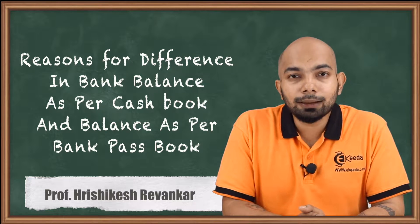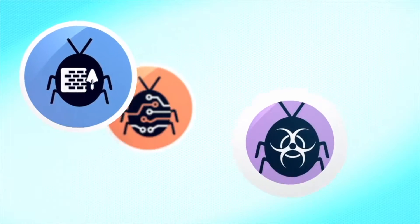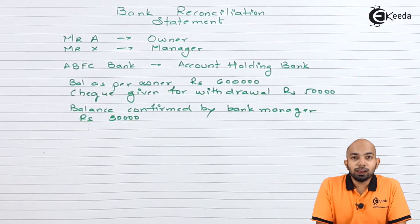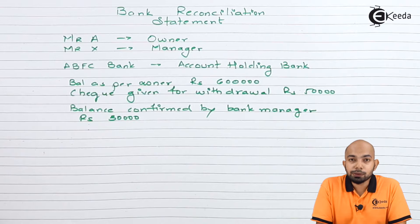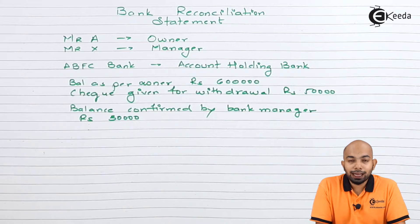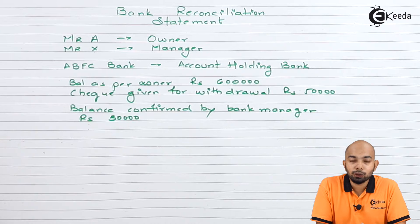We have two categories of reasons that might be the probable cause of the difference between the bank pass book and the cash book. The first category is the time gap category. We will analyze reasons where a specific transaction has been mentioned in one book but omitted or not mentioned in the other — either the pass book or the cash book — and that's one probable cause of the difference.